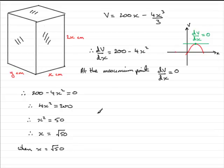we can get that V equals 200 times the square root of 50 minus 4 times the root of 50, all cubed, divided by 3.